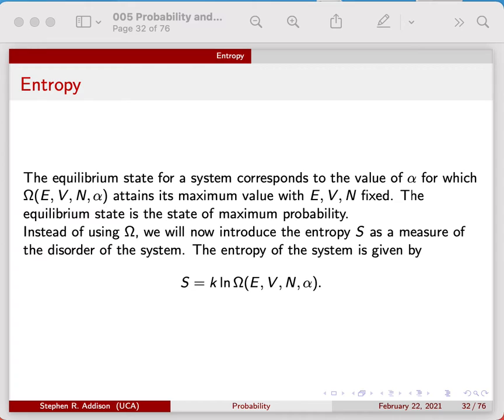If E, V, and N are fixed, the equilibrium state corresponds to the value of alpha for which omega is maximized. The problem with multiplicities is if you combine systems, the multiplicity functions you have to multiply them together. We would rather something that you could add when you combine systems.